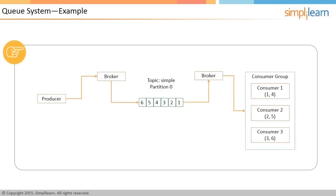So out of six messages in the queue system, two messages are received by consumer one, two messages by consumer two, and two messages by consumer three. The messages are received in the same order that they are produced: consumer one receives message one, consumer two receives message two, consumer three receives message three. After this, consumer one receives message four, consumer two receives message five, and consumer three receives message six.